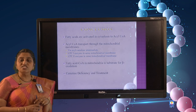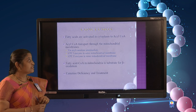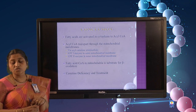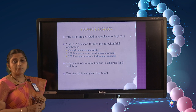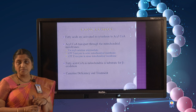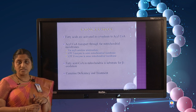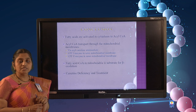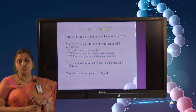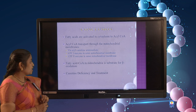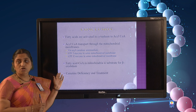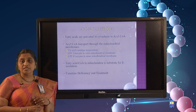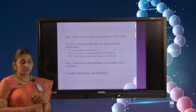To conclude, in this lecture we have seen that fatty acids activated in the cytoplasm can enter the mitochondrial matrix with the help of the carnitine shuttle mechanism, which involves three enzymes — CPT1, CPT2, and translocase — through which acyl-CoA finds its way into the mitochondrial matrix for further beta oxidation and energy production. We have also covered carnitine deficiency and its treatment.